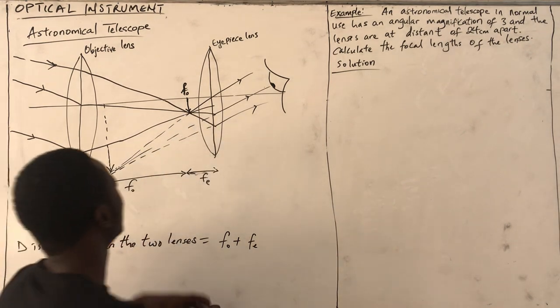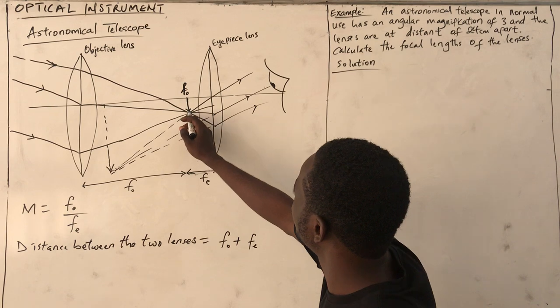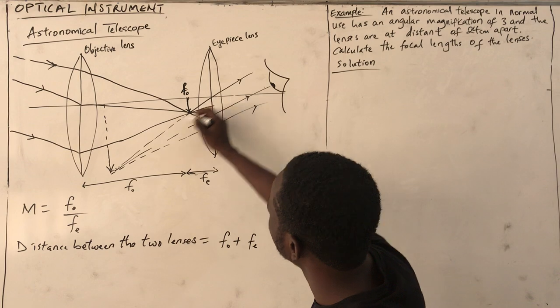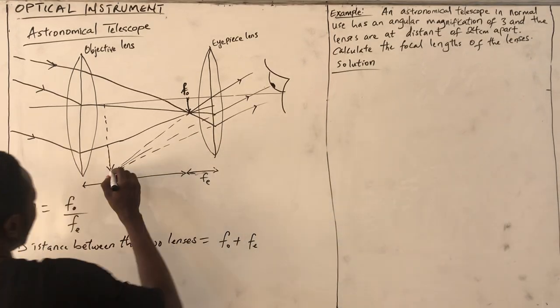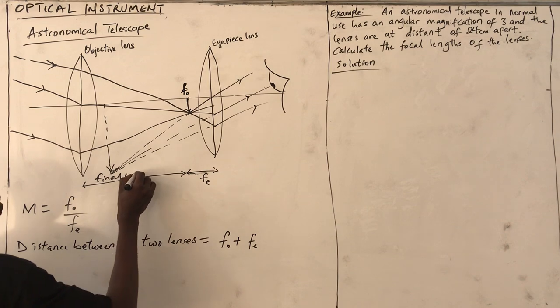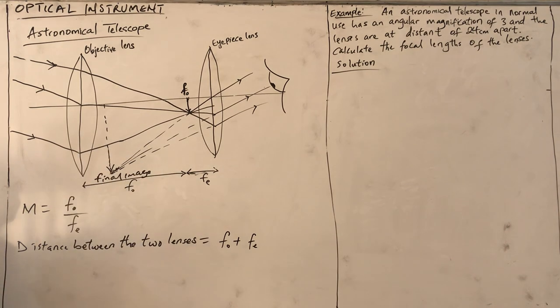The eyepiece then magnifies this object. It will form a ray, and this is where the final image will be formed, which is magnified, inverted, and virtual.